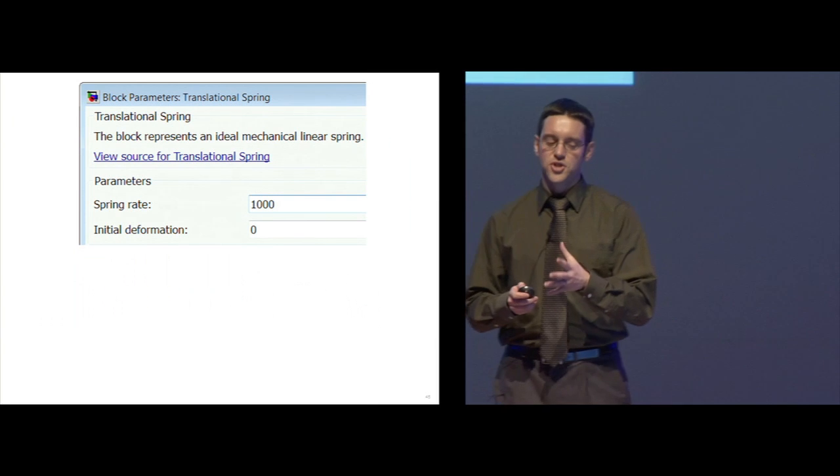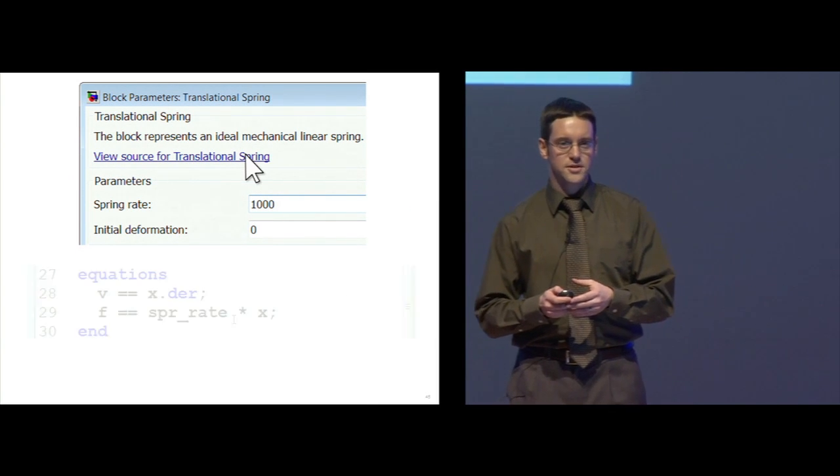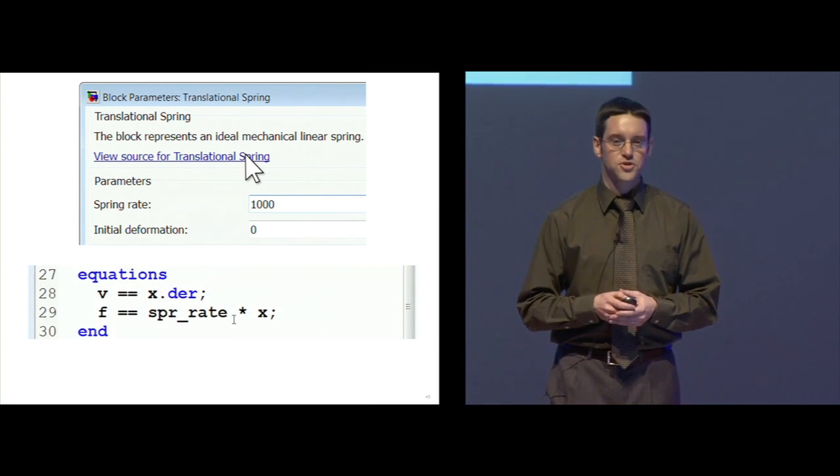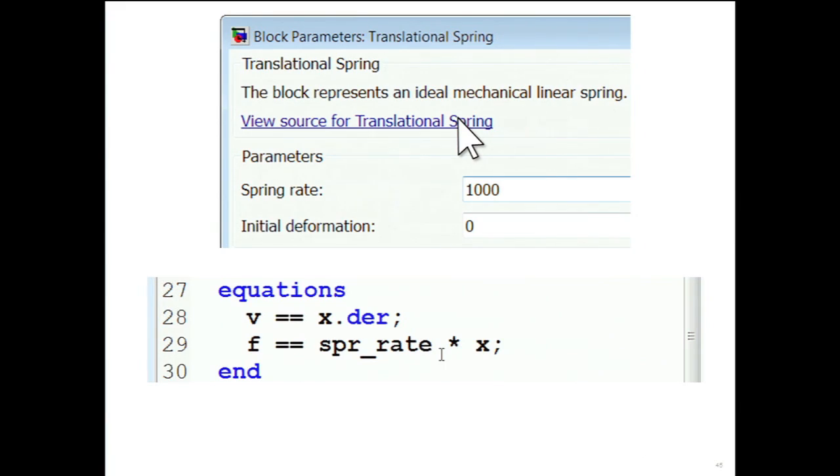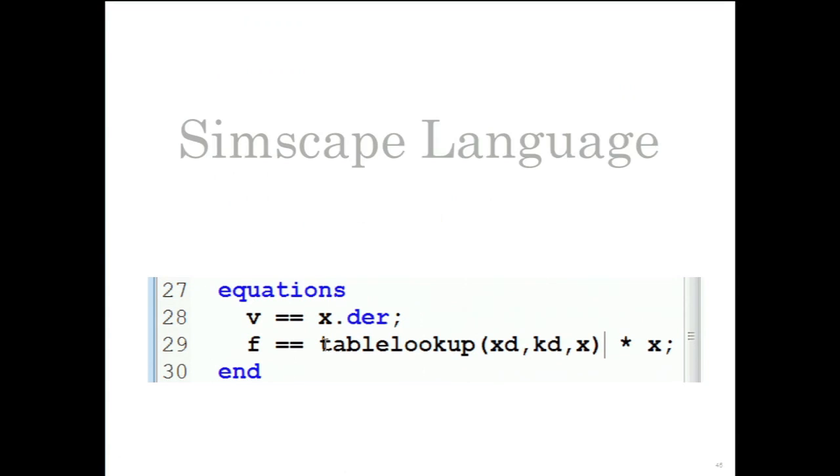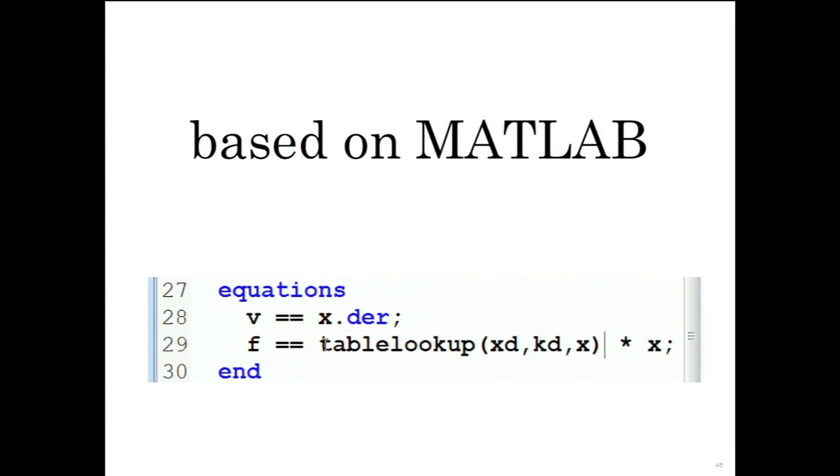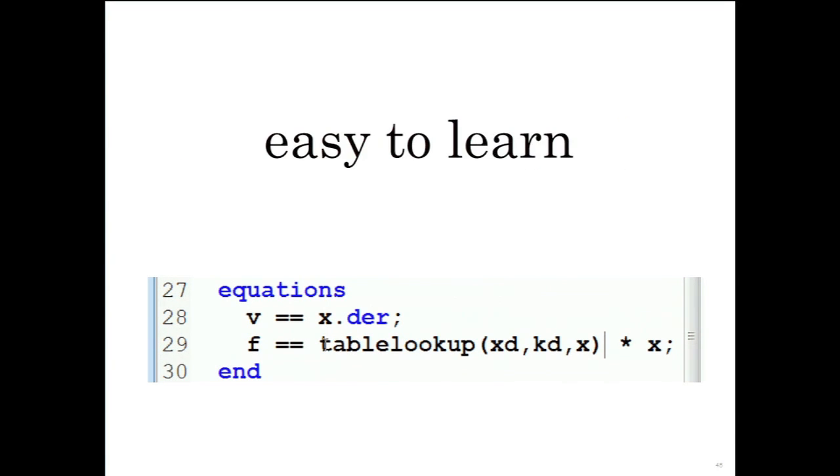If I want to know which equations are used in the component, I can view the Simscape language source code. Here I can see exactly the equations that define the behavior of this component. I can modify these equations to include the effects that I want. Because the Simscape language is based on MATLAB, it is easy to learn and I can use MATLAB commands in my custom components.